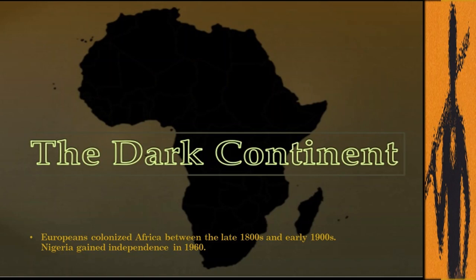As you are aware, Europeans' mad scramble for Africa began in the late 1800s to early 1900s, and Africa became widely known as the Dark Continent — not only because of the dark skin or complexion of its natives, the so-called barbaric customs or dense, dark African jungles, but also due to the lack of Christianity, which Europeans termed as the light of God.